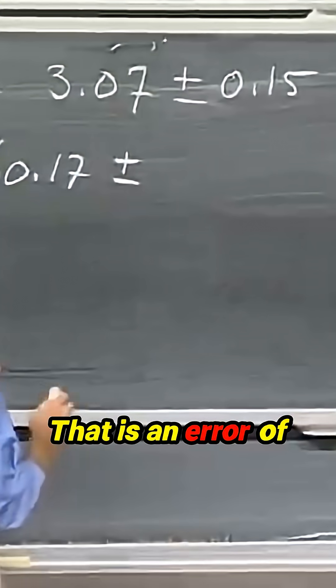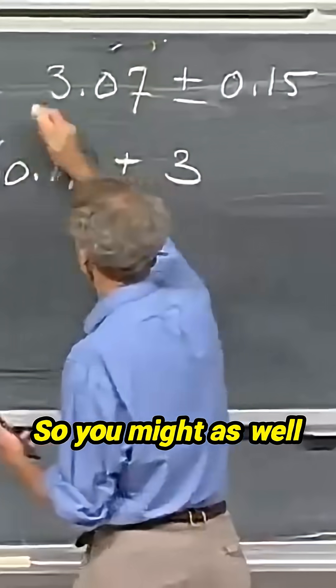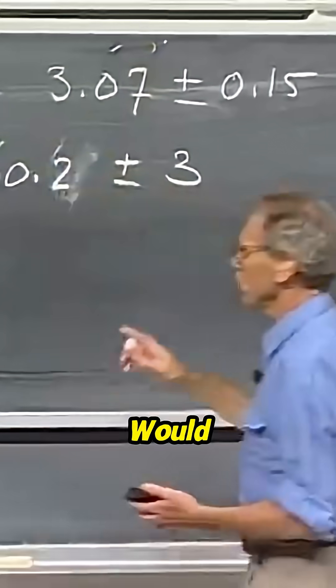60.17 plus an error of five percent. That is an error of three. So you might as well make this 60.2. Would you please confirm that, that I didn't make a mistake?